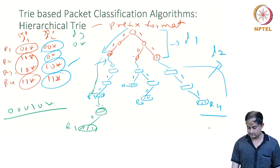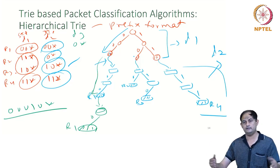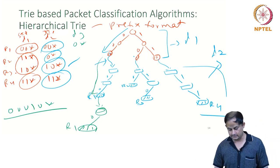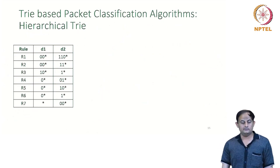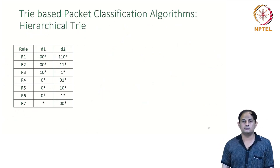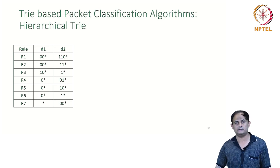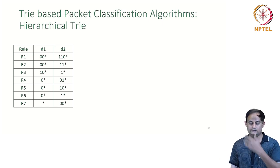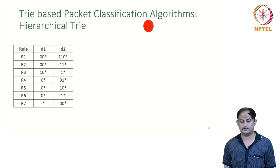This is how you construct the hierarchical trie — a binary trie for every dimension, attached appropriately inside this structure. Let us take a second example. Here is a classifier with seven rules and two dimensions for simplicity.